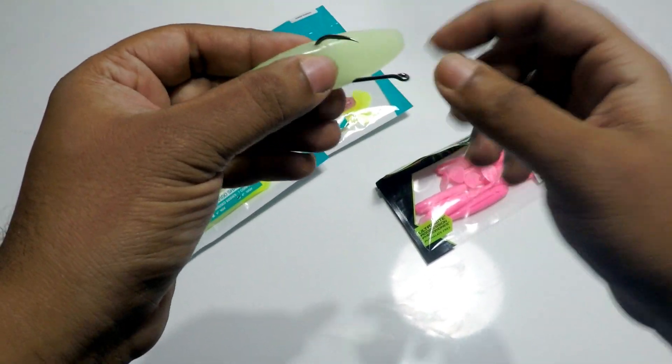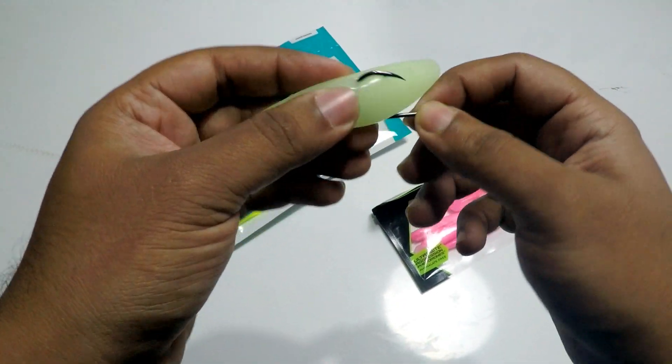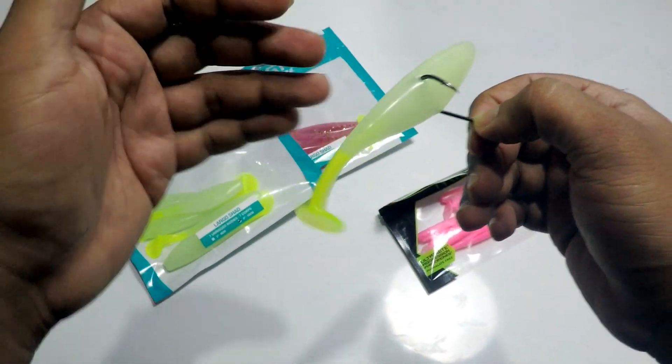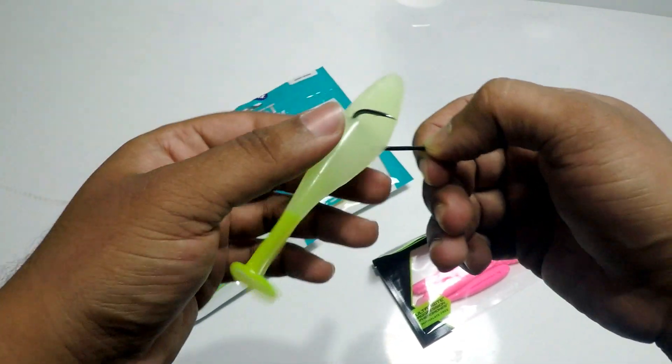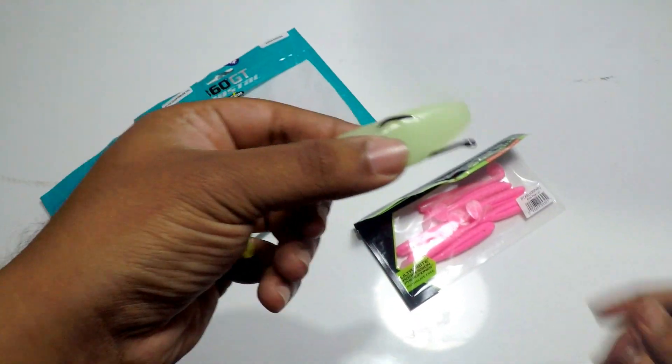And this helps you to set the hook very neatly because the fish is unaware about the hook, and yet it concentrates on the fish and is able to bite the whole hook. You get a very good hook setting from here. Thank you so much.